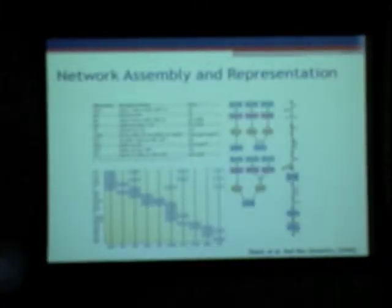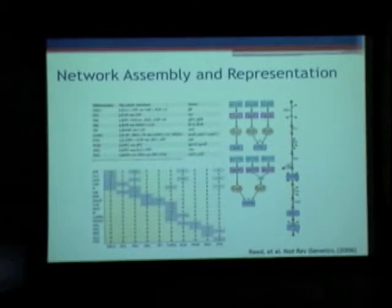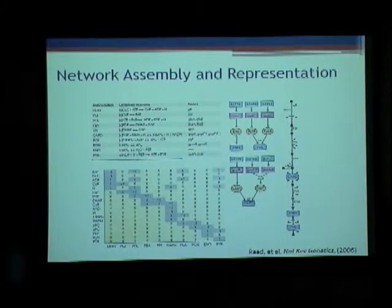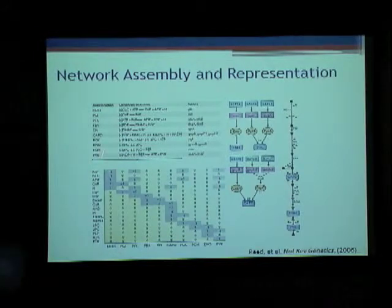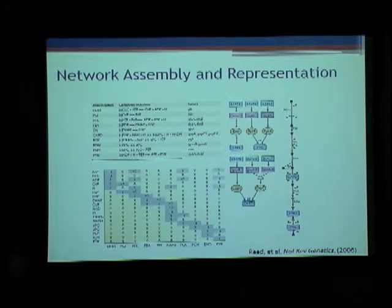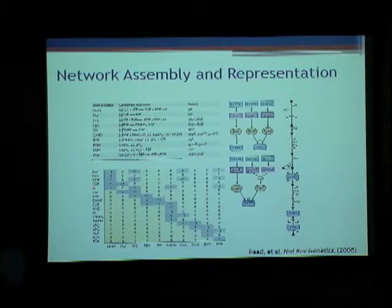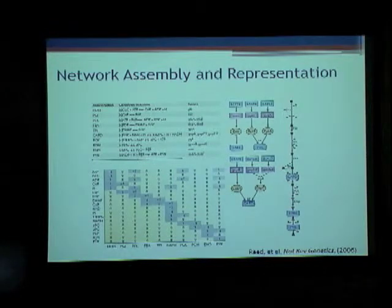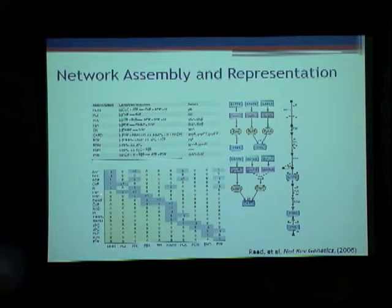How do we go about network assembly and representation? Let's say you have the glycolysis pathway and you have the reaction glucosic phosphate isomerase. All such reactions in the glycolysis pathway are arranged in the form of a matrix. On the left you can see all the metabolites, and at the bottom are the reactions. This matrix is known as the S matrix. You see the stoichiometric coefficients of the reactions.